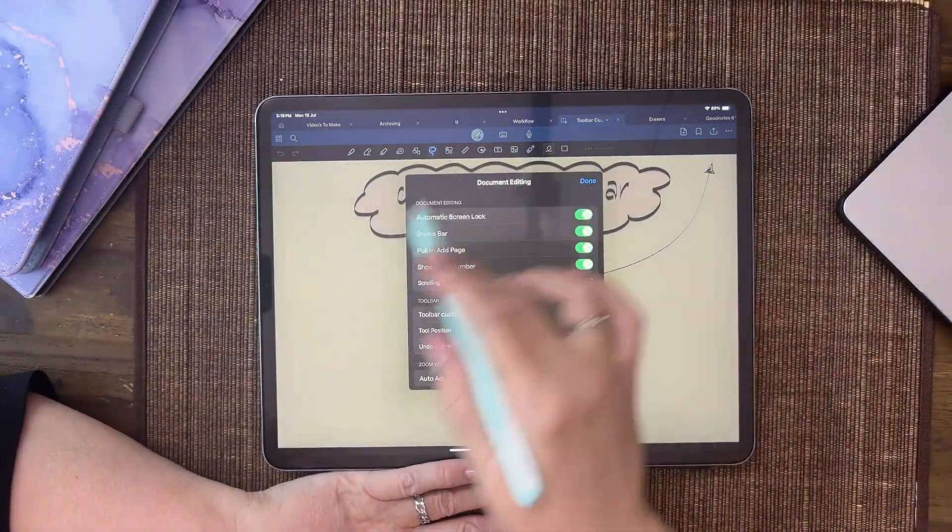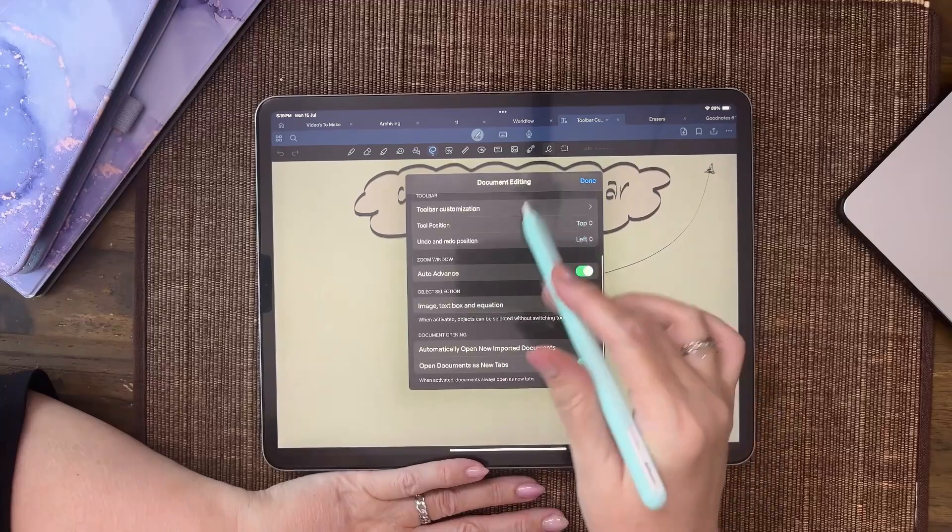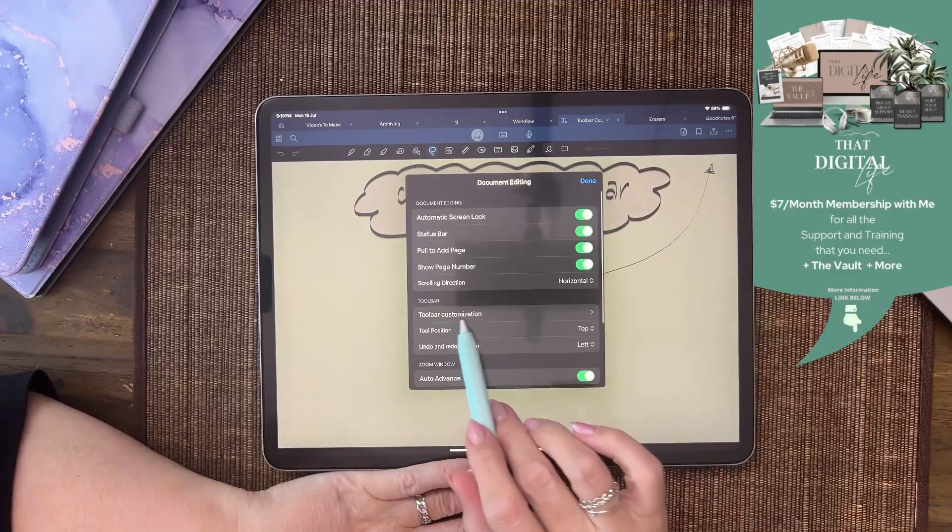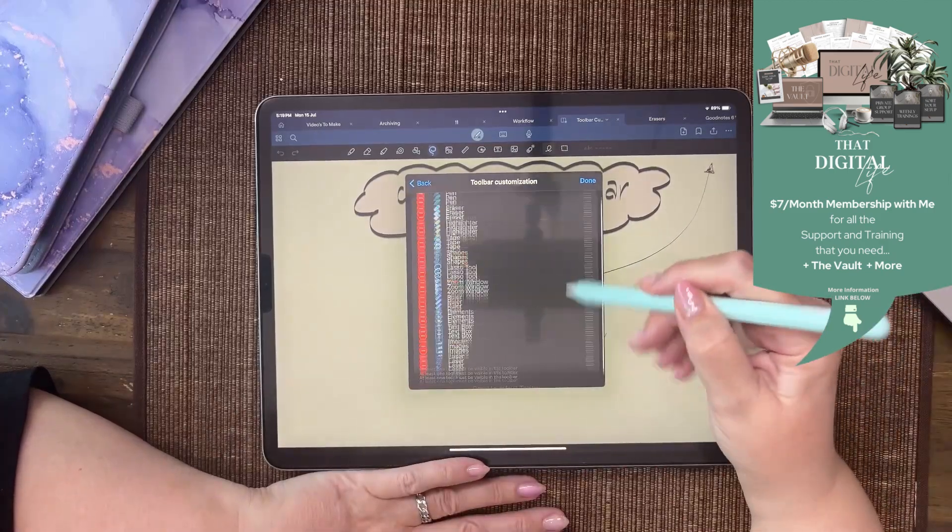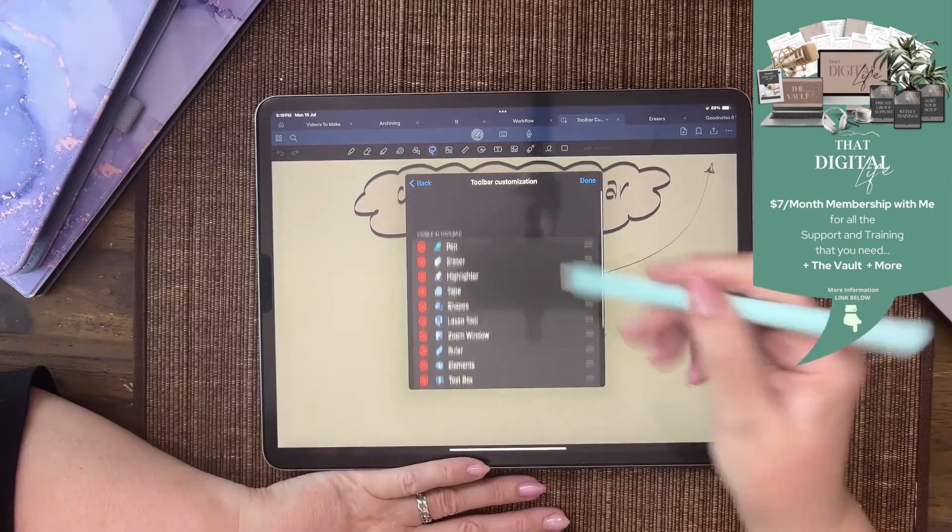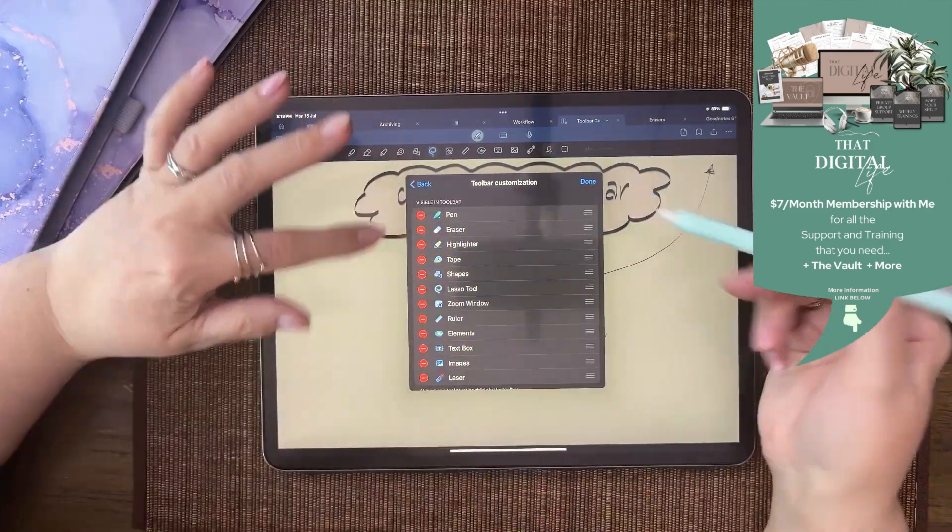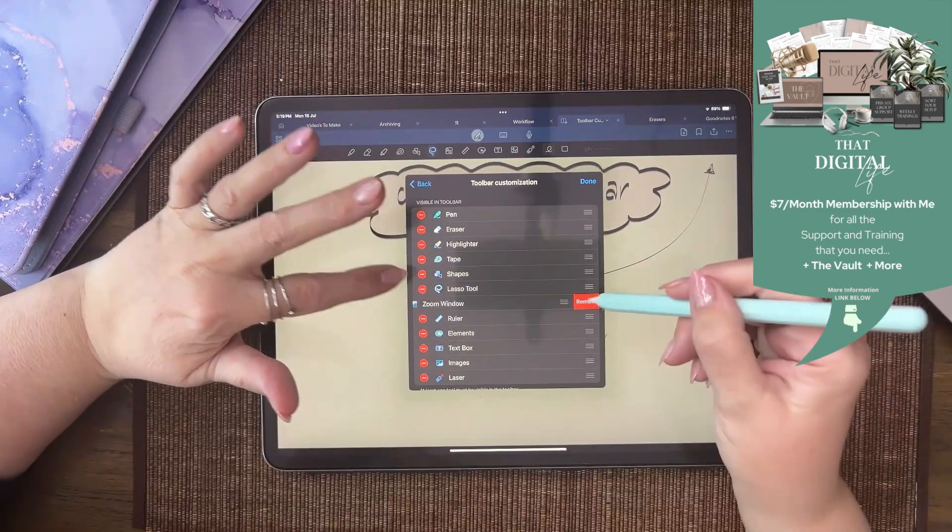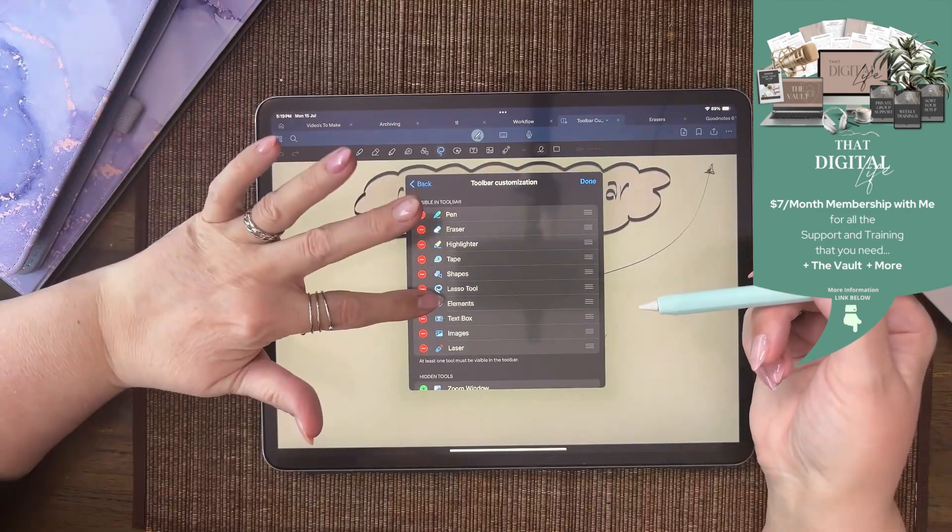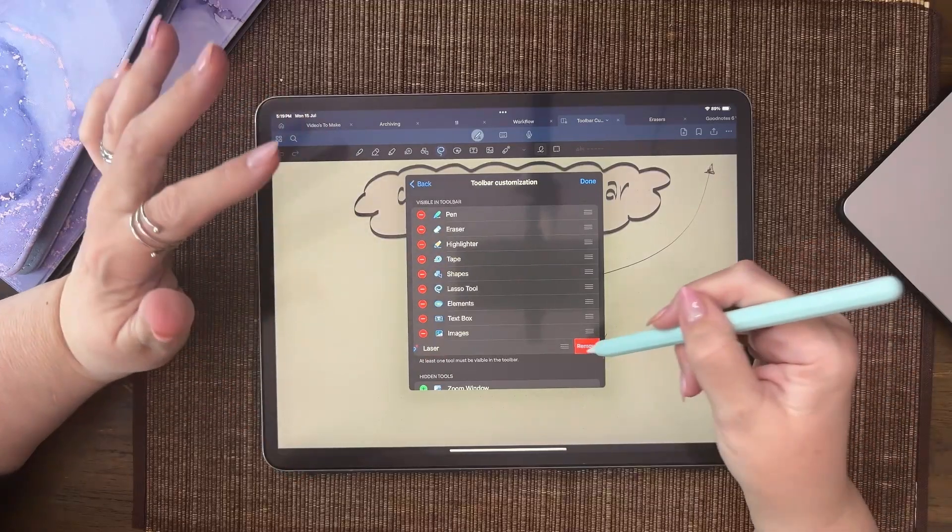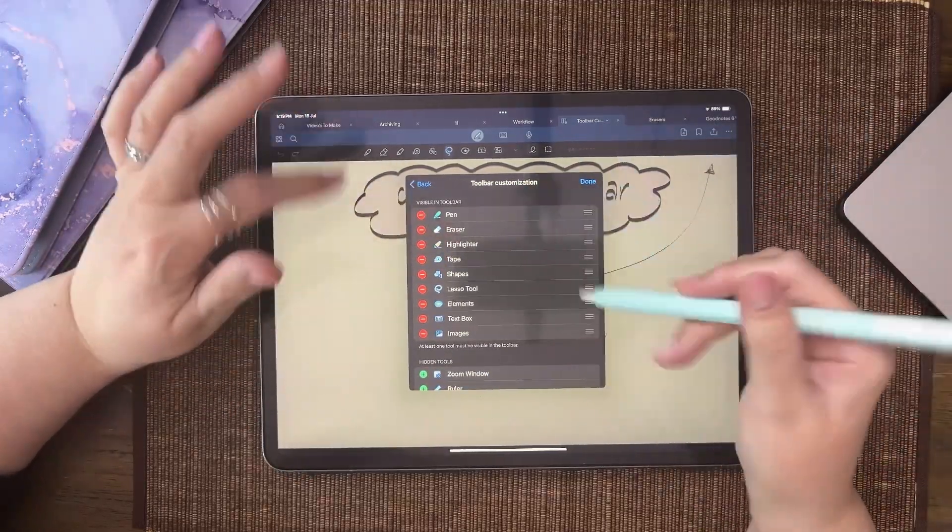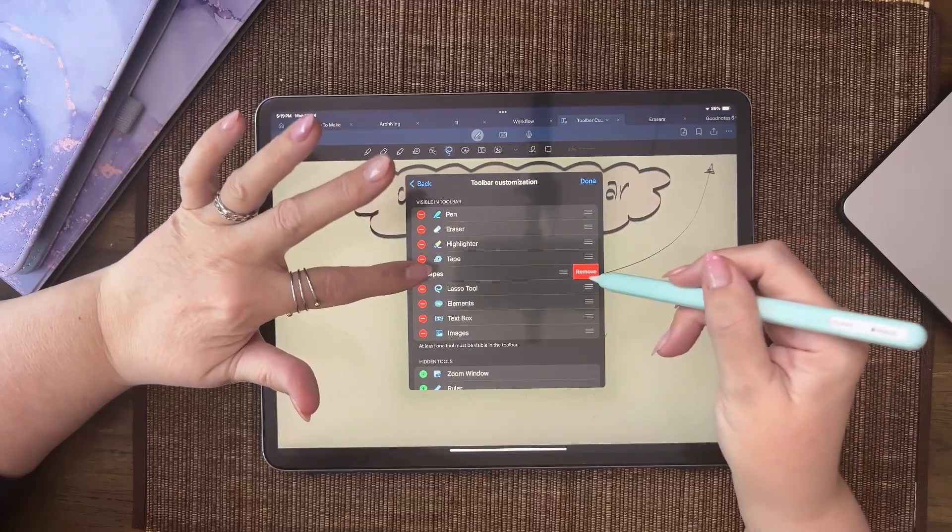It brings up this screen and you can see it goes all the way down. You want toolbar customization, so click anywhere on there. These are all the options that are up there. You can remove items—you could remove the ruler, or maybe you don't want the laser pointer.